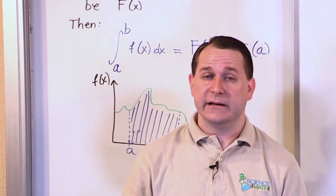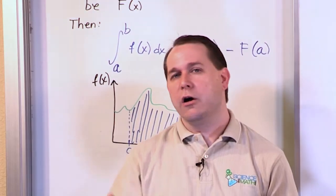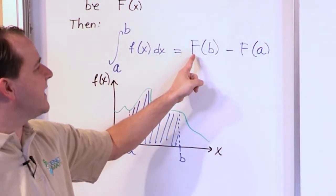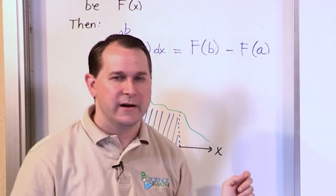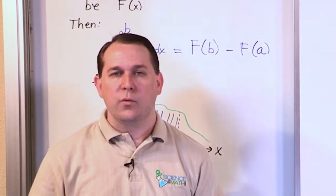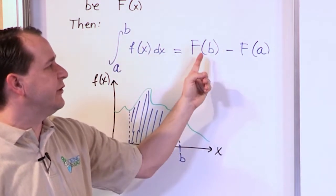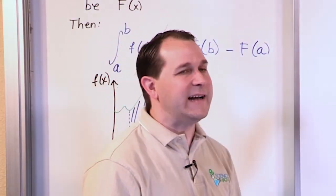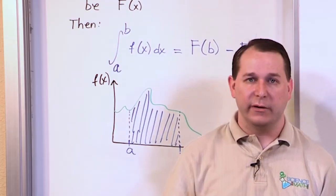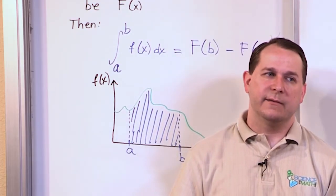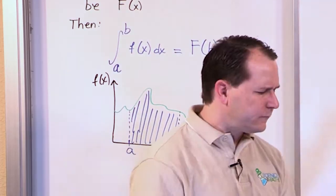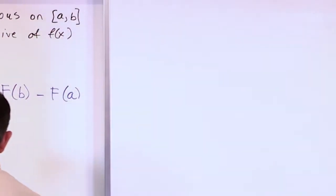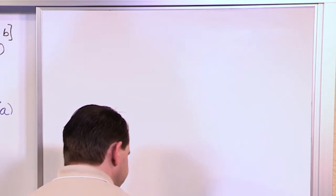All of the stuff about integration and calculus really boils down to being able to find capital F, the anti-derivative, because that's really the work. Once you do that, doing the subtraction and evaluating from a to b is very simple — that's just algebra. Finding the anti-derivative is the part that's a little bit tricky. But it's very easy to explain the concept, so let me do that right now with some practical examples.